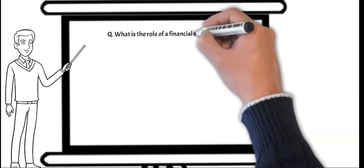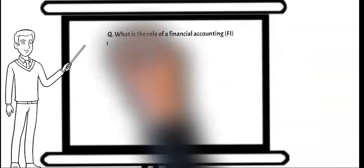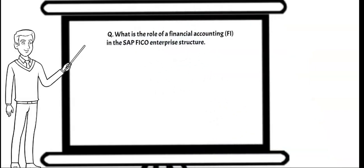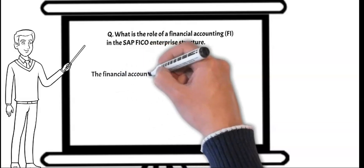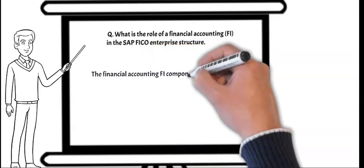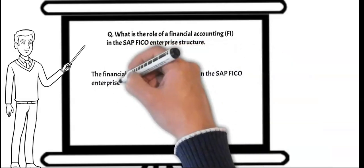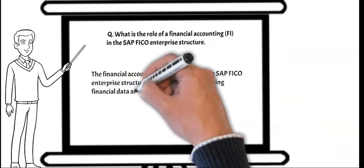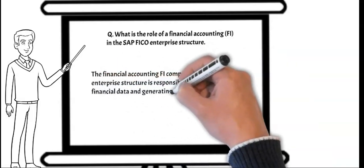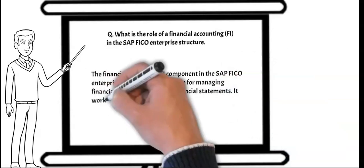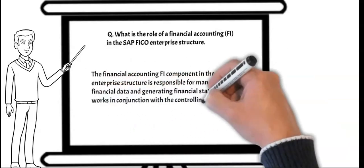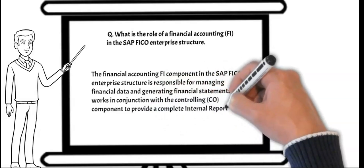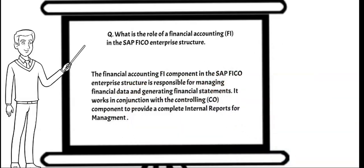Next question: what is the role of financial accounting in the SAP FICO enterprise structure? The financial accounting FI component in the SAP FICO enterprise structure is responsible for managing financial data and generating financial statements. It works in conjunction with the controlling CO component to provide a complete internal report for management.